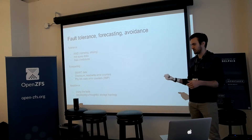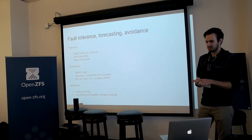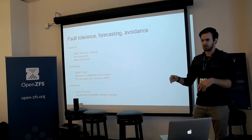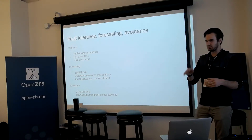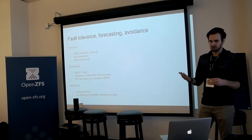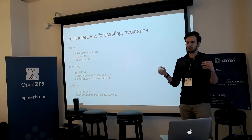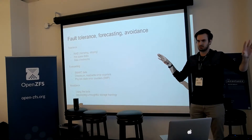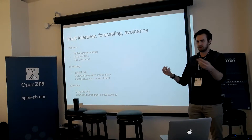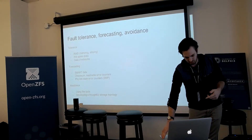We also have things like phy-link state error counters. It'll tell you in the SAS fabric where errors might be coming from that aren't seen by disks yet — the SAS topology is sort of hiding them by reissuing requests or whatever is going on in firmware land. And then we also have avoidance — doing something like creating a pool that takes into account the physical layout of disks in the system, so that if you have disks connected through different cables, you can create a pool that can tolerate a failure of one cable.